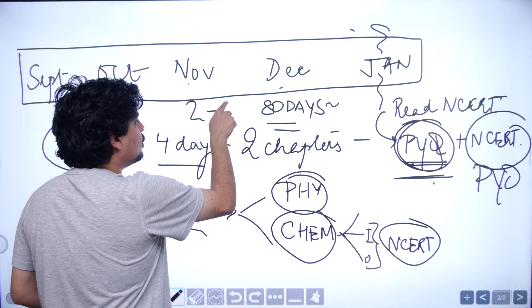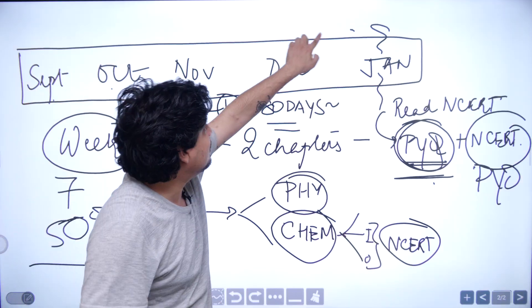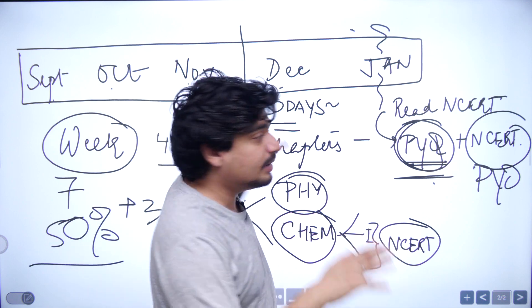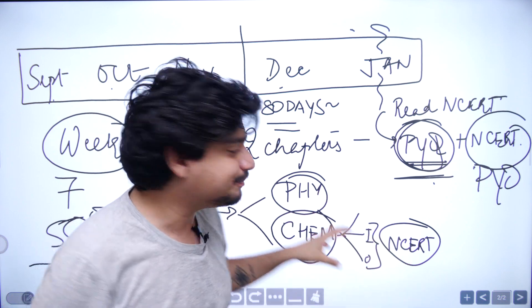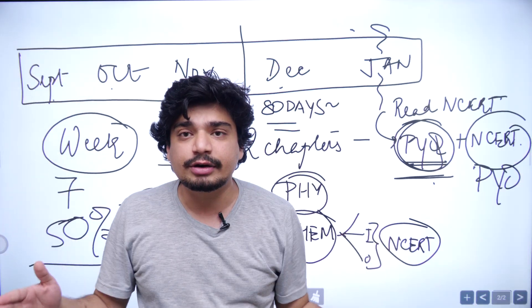In two days, you can finish one bio chapter. By November end, you should be able to finish biology also completely. And the remaining three days. So by December end, you should be done with your one revision.